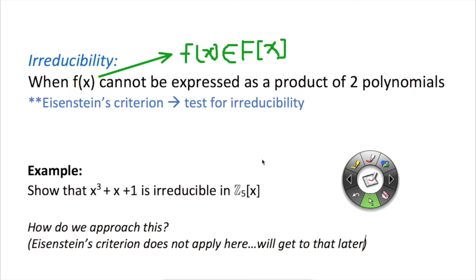So let's just review irreducibility quickly. When f(x), a polynomial, cannot be expressed as a product of two polynomials, we say that f(x) is irreducible. So for example, if f(x) equals the product of two polynomials, g(x) times h(x), with the degree of g(x) and h(x) both less than f(x), then we can say f(x) is reducible.